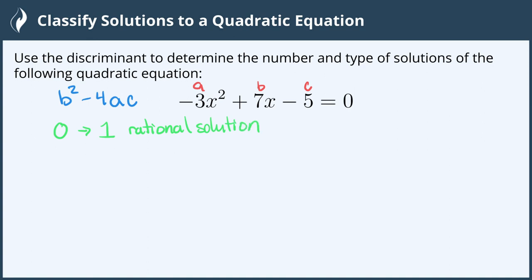If we go through and calculate it out and get a positive perfect square, this tells us we will have two rational solutions.